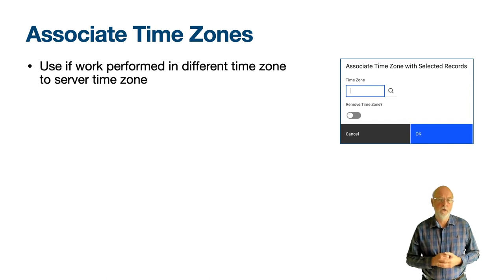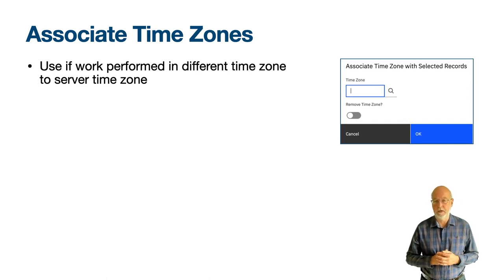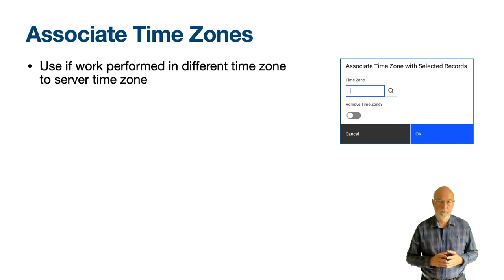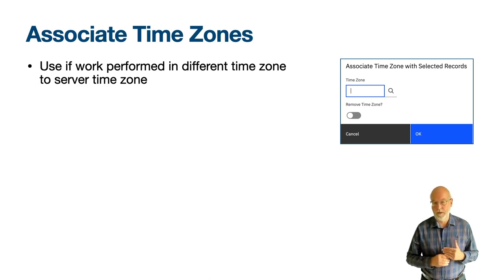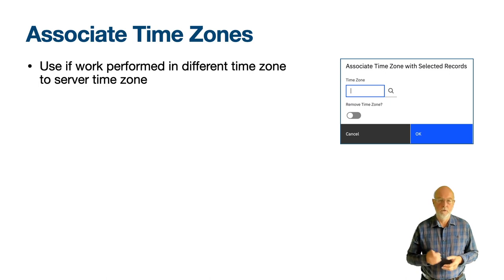The associate time zone action is available in the locations and assets application and can be used from the list tab to set the time zone for a selected set of locations or assets. To use this from the list tab you must use select records, otherwise you will receive the message BMXAA9065I: no records were selected from the list.